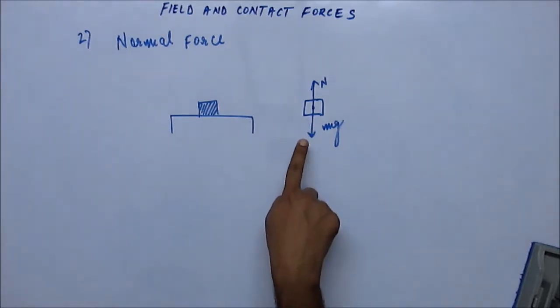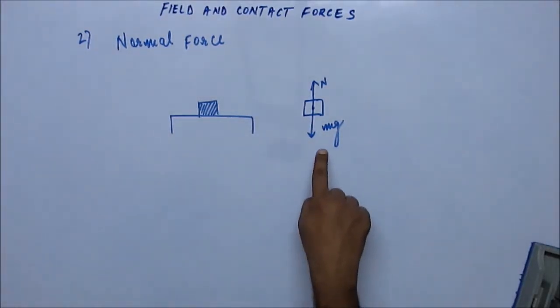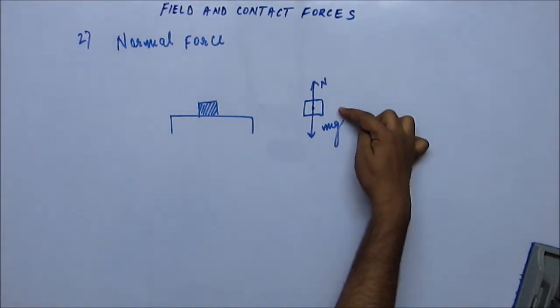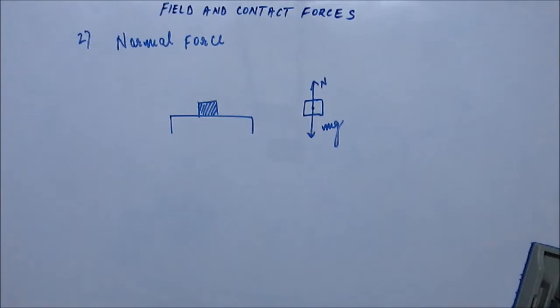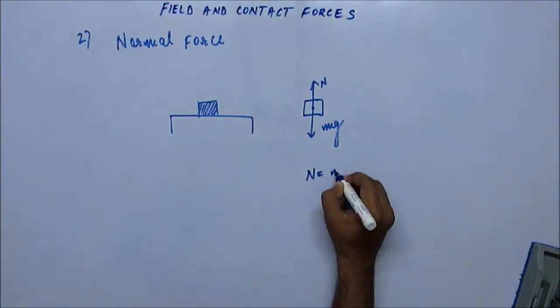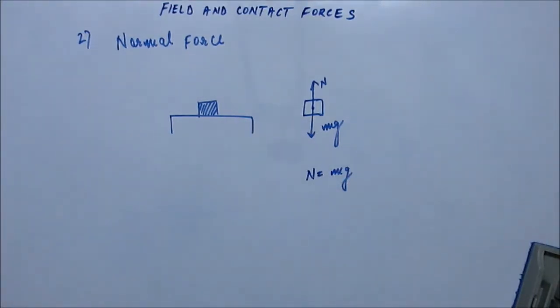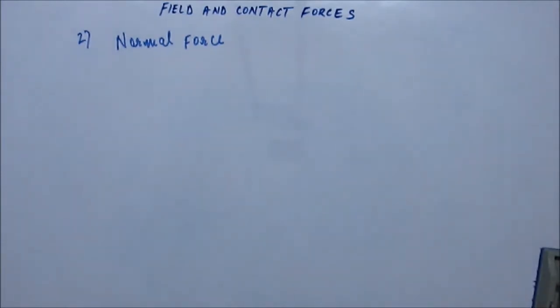That kind of force is called normal reaction, and it balances the gravitational pull. If you look at the isolated force vectors on the block, they cancel each other, and due to the equilibrium we observe, N should be equal to mg, so that there is no net external force acting on the block.